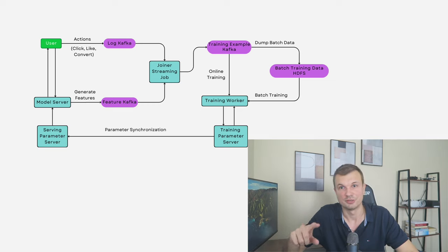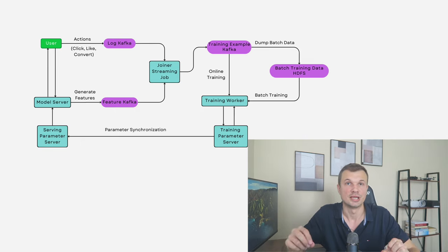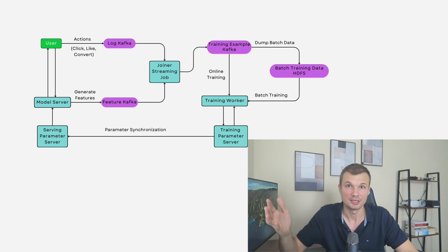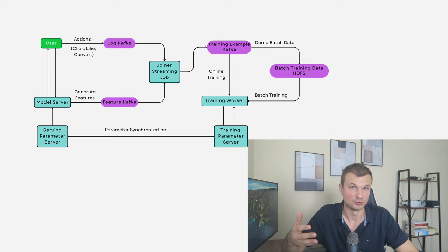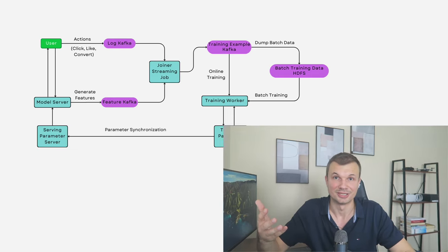As you can see at the bottom of the diagram, we have training parameter servers and serving parameter servers. These servers hold the weights of the model. The training parameter servers get updated from both the real-time data and the batch training of the model. The serving parameter servers are responsible for serving those weights in the model in real time.